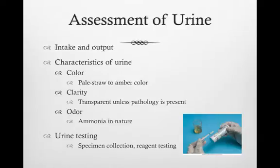Assessment of the urine includes assessment of urine characteristics such as color, clarity, and odor. Urine color can range from straw yellow to amber and generally indicates the concentration of the urine. Urine is usually clear unless there is pathology present, such as urinary tract infection. The urine may have a slight ammonia odor, and different odors can indicate different pathology.